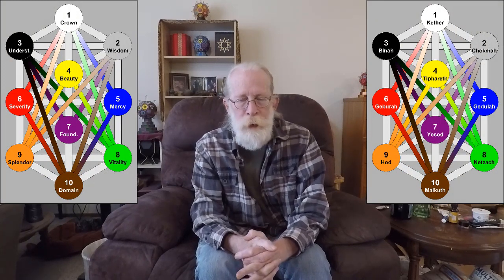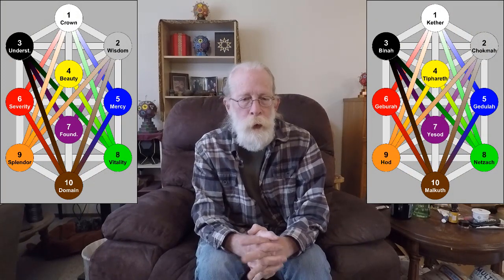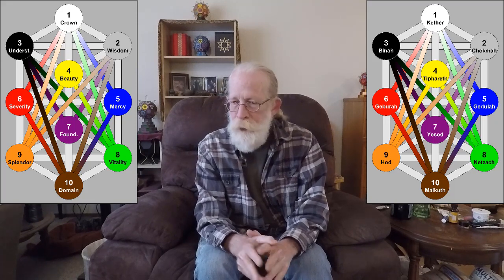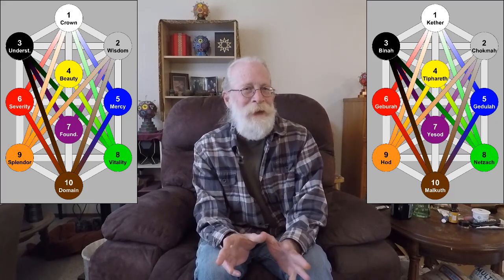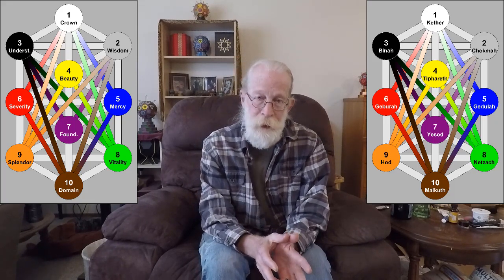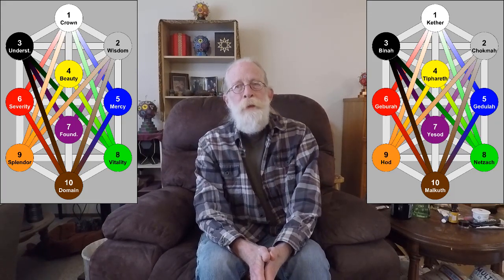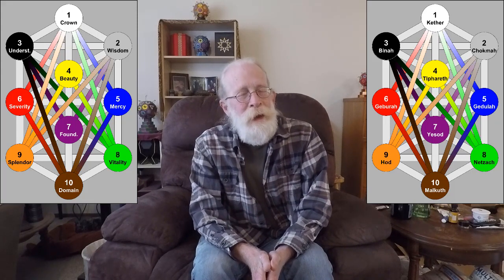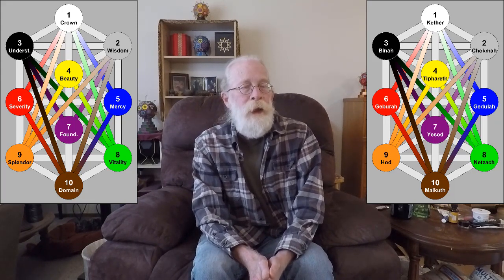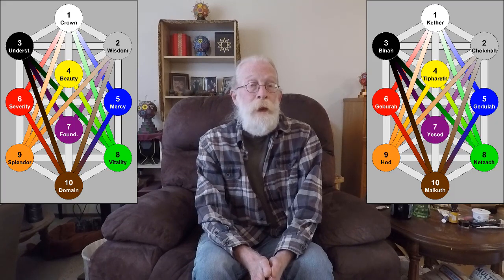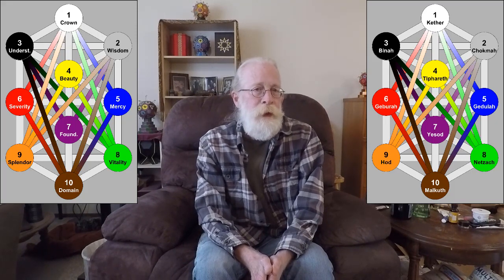The fifth component of the Tree of Life are the hidden paths, or secret paths, or technically the unlettered paths. These paths have no set of correspondences like all of the other paths have had. They do not have a Hebrew letter associated with them. They're really not mentioned, at least directly, in any of the Kabbalistic literature I've ever encountered. But they are logical connections within the Tree of Life diagram.